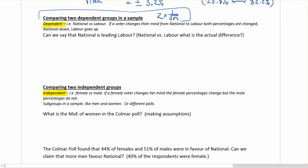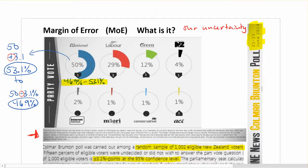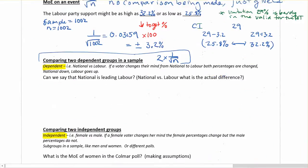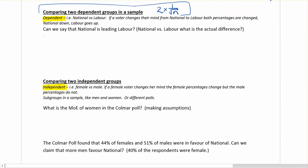If we have this question, can we say that national is leading labour? So national versus labour, what's our actual difference? Going back to our poll again, we know nationals at 50 and labour is at 29, and we'll need to use that information. We've got a sample size of 1002, so n will be 1002.